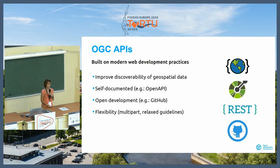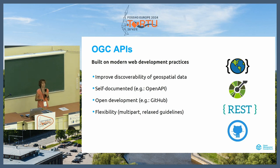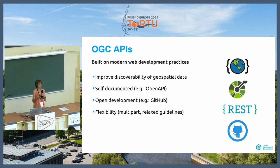With that idea, we have a new breadth of standards in OGC — a new family of standards that is built on modern web development practices. For instance, it leverages schema.org to make sure that data is discoverable in search engines, because most people these days are turning to search engines to look for data, including geospatial data, and not really going to portals. They are self-documented, with machine-readable descriptions of the APIs generated using OpenAPI.